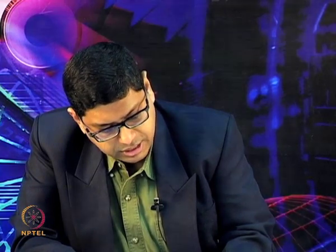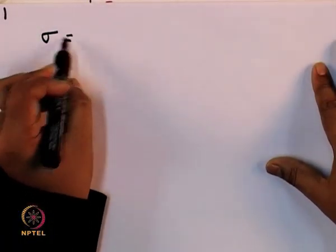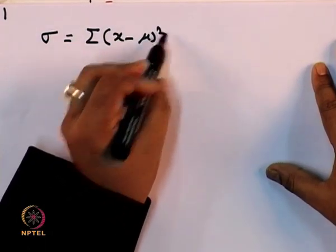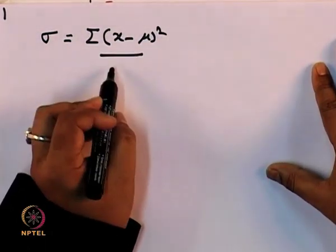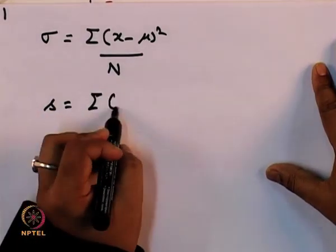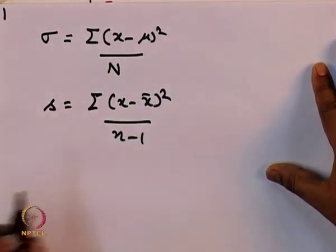One of the widely used metrics for characterizing variation in the data is standard deviation. You use sigma to describe standard deviation of a population, given by summation of (x minus mu) squared by capital N, or S for the sample, the summation of (x minus x-bar) squared by N minus 1.